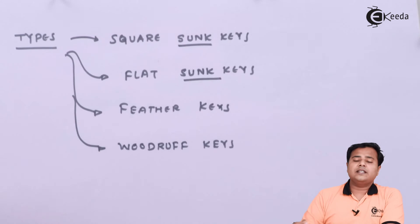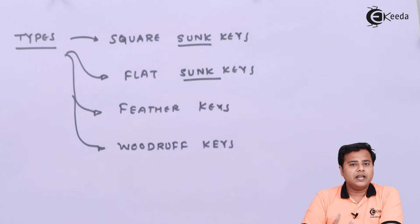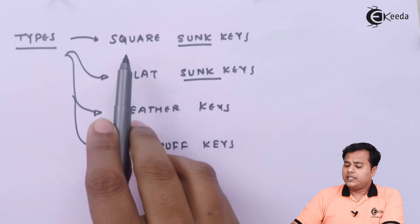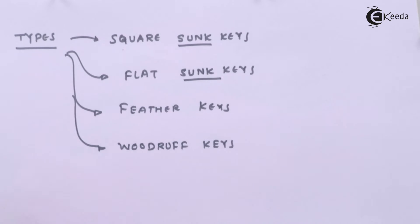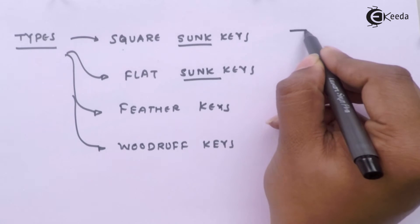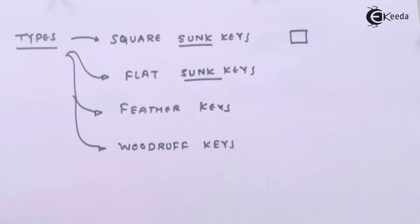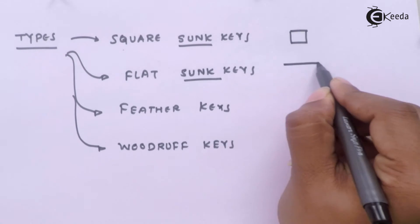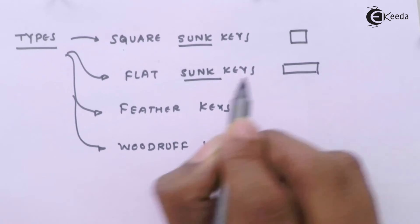Types of keys are basically sunk key, saddle key and woodruff keys. Sunk key has a feature that it goes half part inside the hub and half part inside the shaft. Square sunk key is what we are going to look at, and flat sunk key. Square sunk key basically is a square in cross section, flat sunk key is rectangular in cross section.